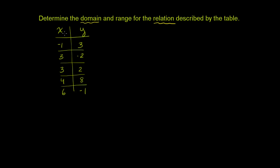You can view the x as the inputs. So when x is negative 1, y is 3. When x is 3, y is negative 2. When x is 3 again, now y is 2. And that's why we can't describe this as a function here, because we have two different y values for a given x value. But it can be a relation. When x is 4, y is 8. When x is 6, y is negative 1.